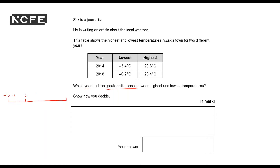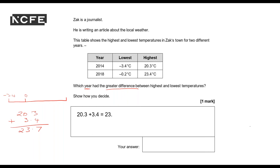In my answer box, I'll write 20.3 plus 3.4 equals. If it's an online assessment, I might use column addition. So doing column addition for 20.3 plus 3.4 gives me 23.7. I'll write my answer in the answer box: 23.7.